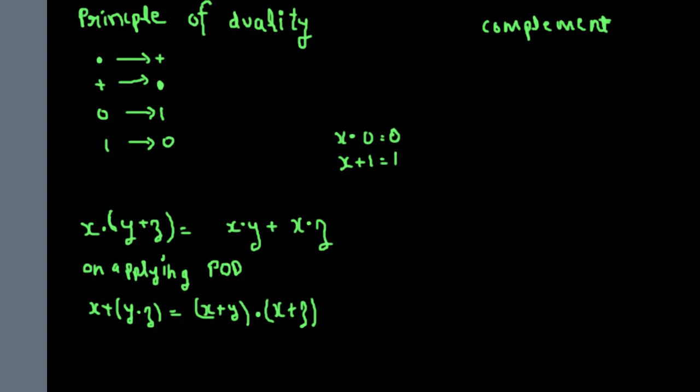In addition, you change the variable: if you have x, you change it to x', and if you have x', you change it to x. So in principle of duality you do 4 changes, but in complement you also do these 2 additional changes.